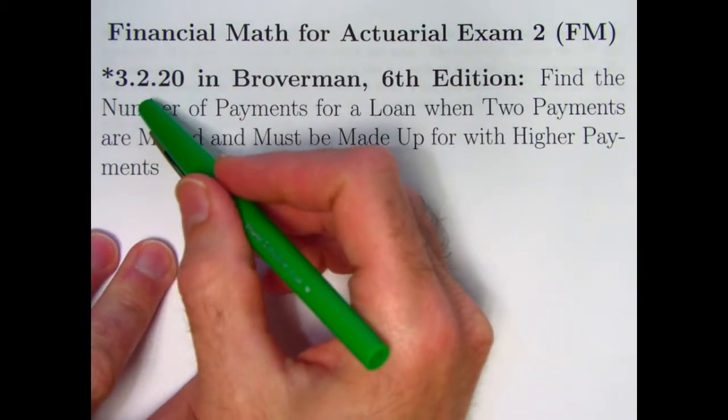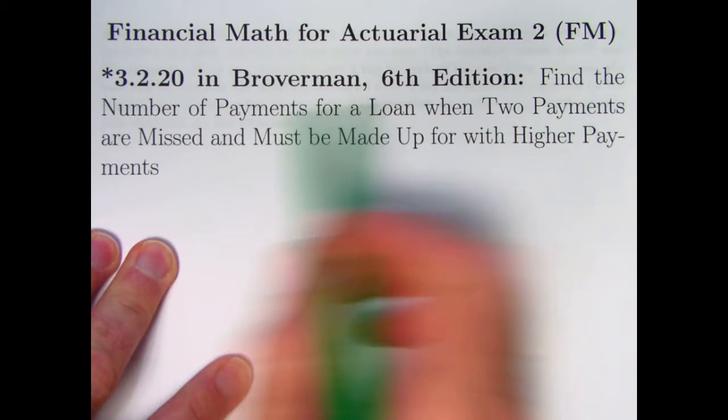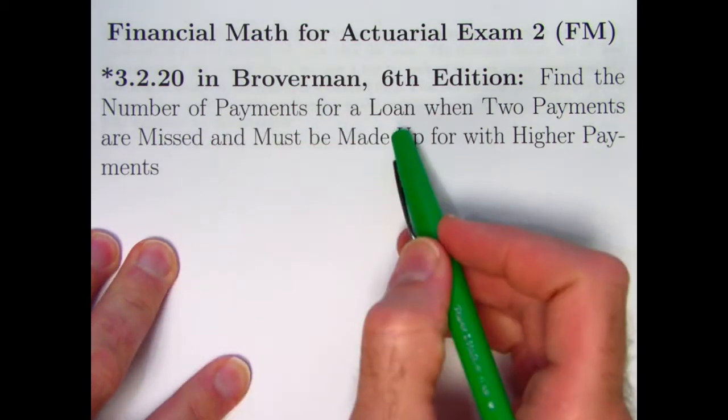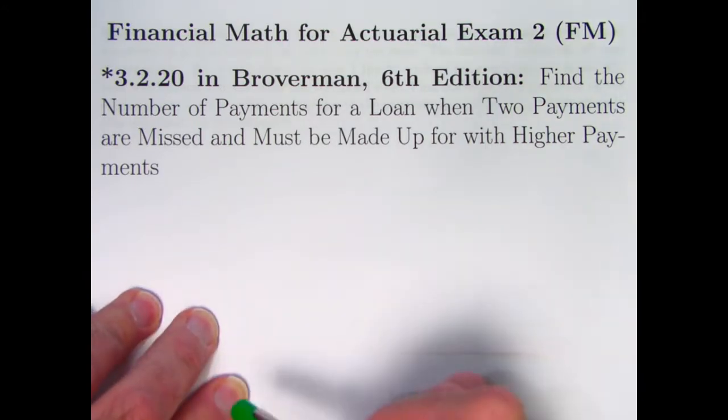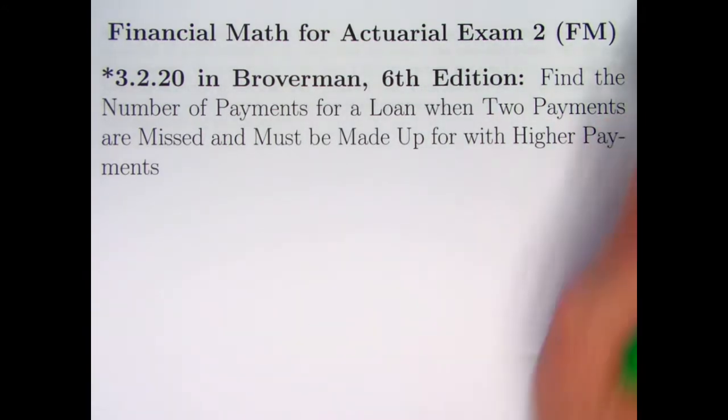Hello, in this problem 3.2.20, we're going to be finding the number of payments for a loan when two payments happen to be missed and must be made up for with higher payments for the remaining payments.